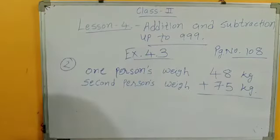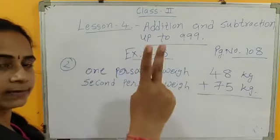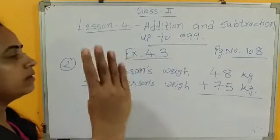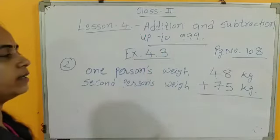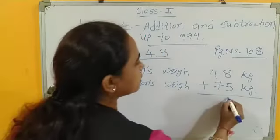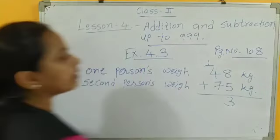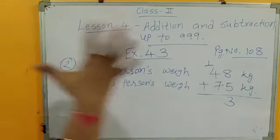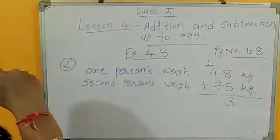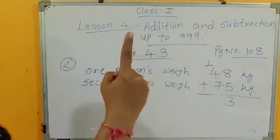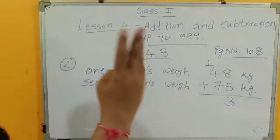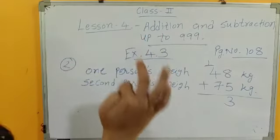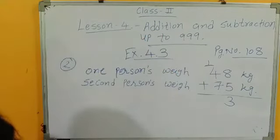8 plus 5. So 8 plus 5. After 8, count 5 numbers. 9, 10, 11, 12, 13. 1, 3, 13. 3 is here. 1 carry forward. Then 1 plus 4, 5. 5 plus 7. 6, 7, 8, 9, 10, 11, 12. 5 plus 7, 12.